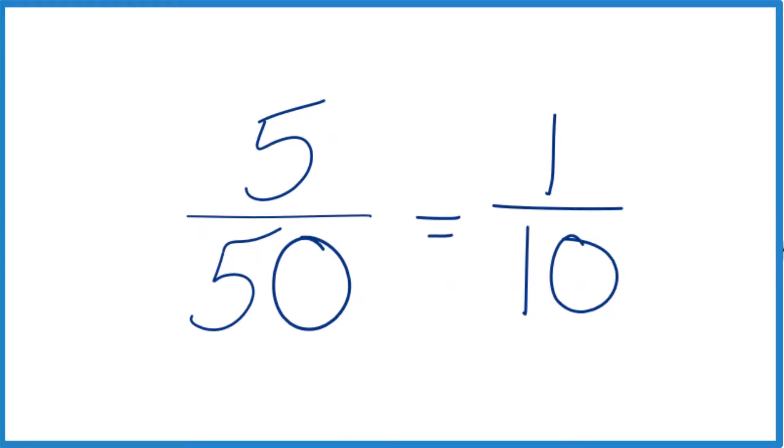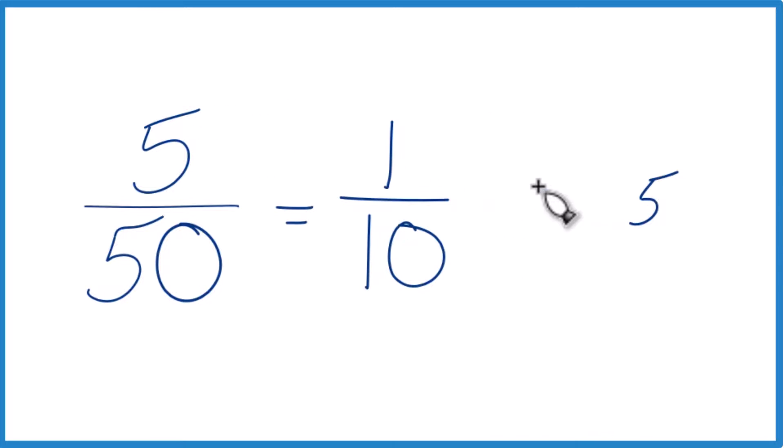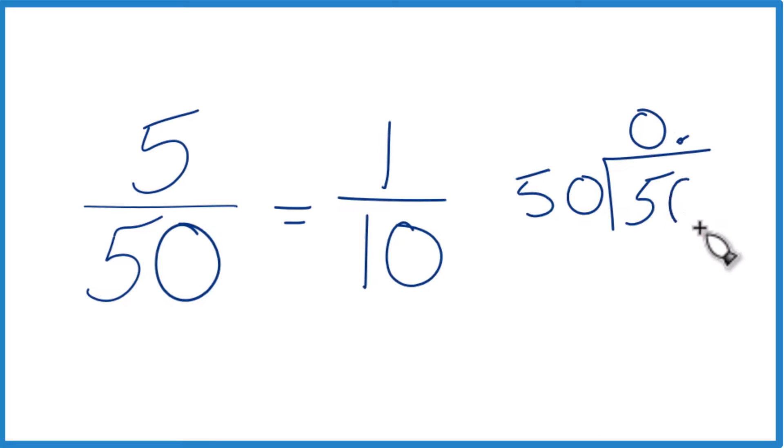If you need to do this longhand, you can take 5 and see how many times 50 goes into 5. 50 doesn't go into 5, so we put a zero with a decimal point here and then call this 50.